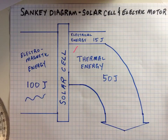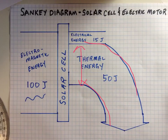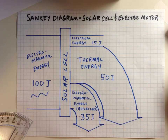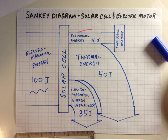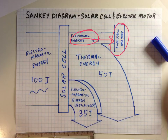Now we account for the wasted or lost energy from the solar cell. There are 50 joules of thermal energy, so that arrow is about 10 boxes wide, curving away to represent wasted energy. Then 35 joules of reflected electromagnetic energy, so that arrow is 7 boxes wide, also curving away. With the first step complete, this electrical energy continues on to the electric motor, where further energy transformations will occur.